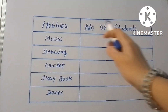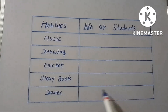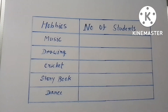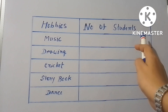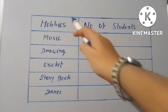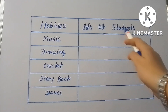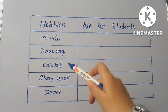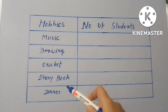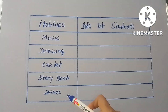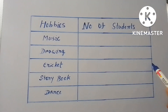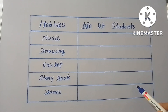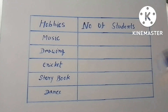Suppose this is a pictorial representation of a classroom. Here the records of the favorite hobbies of the students are recorded. In the first column the hobbies are listed — music, drawing, cricket, storybook, and dance — and on the right side is the number of students we have to write.